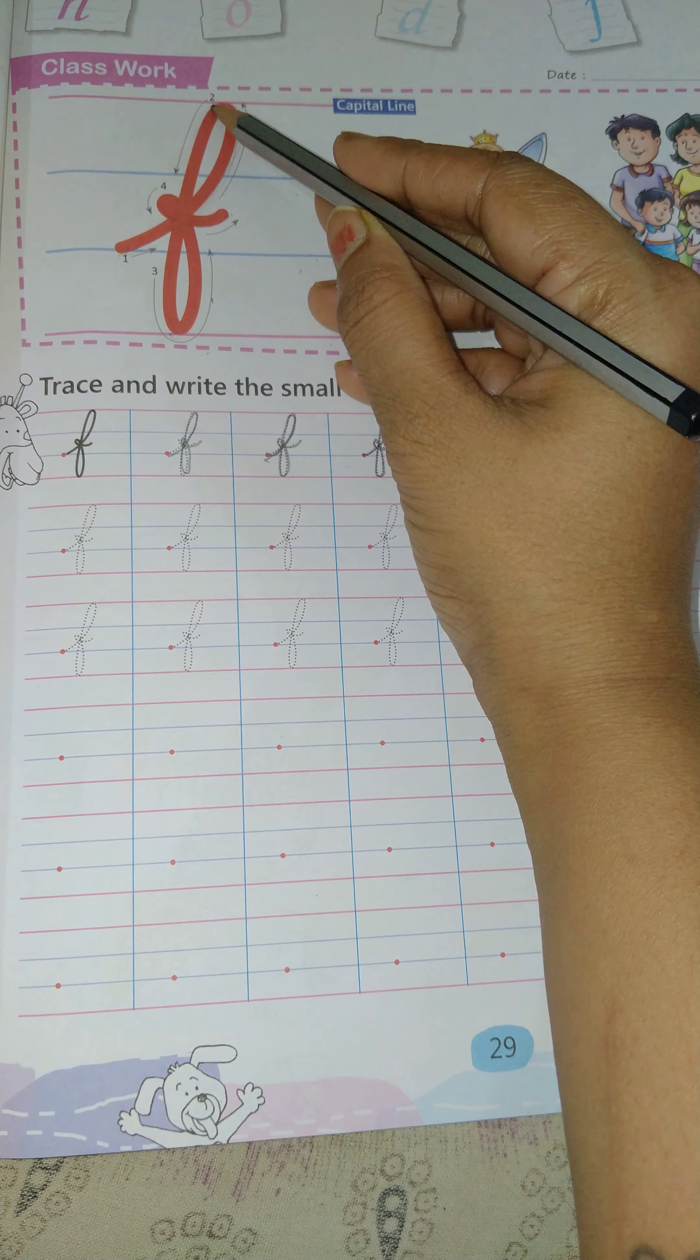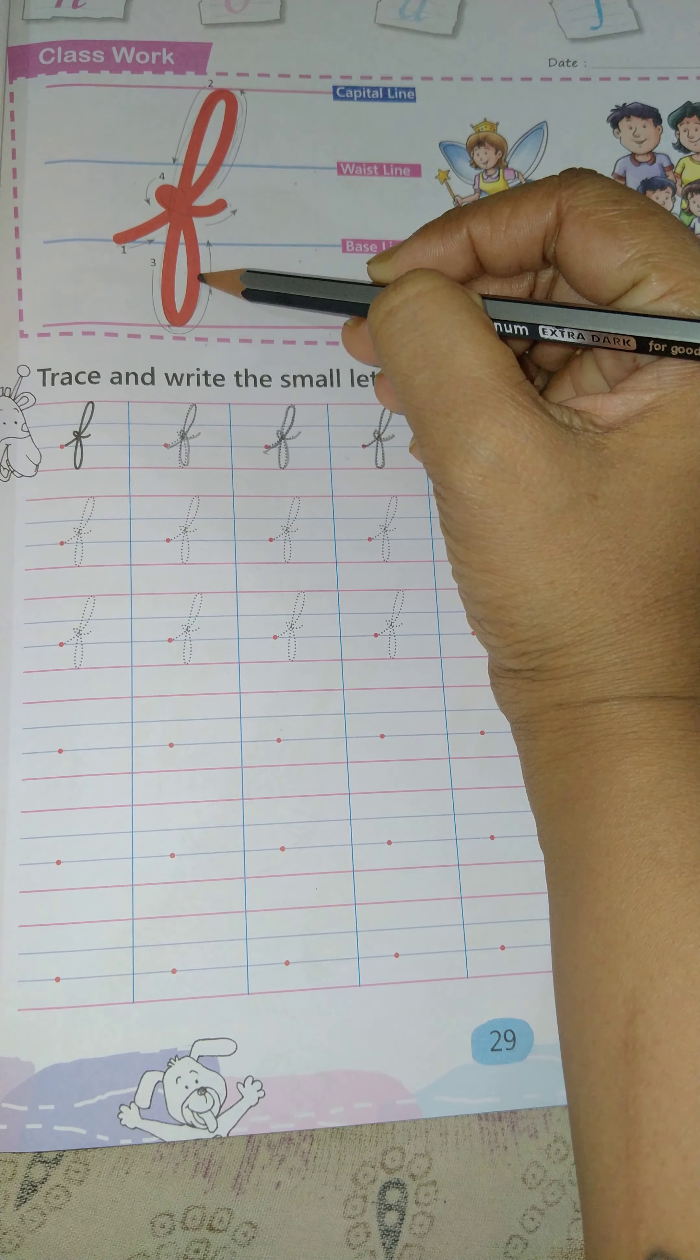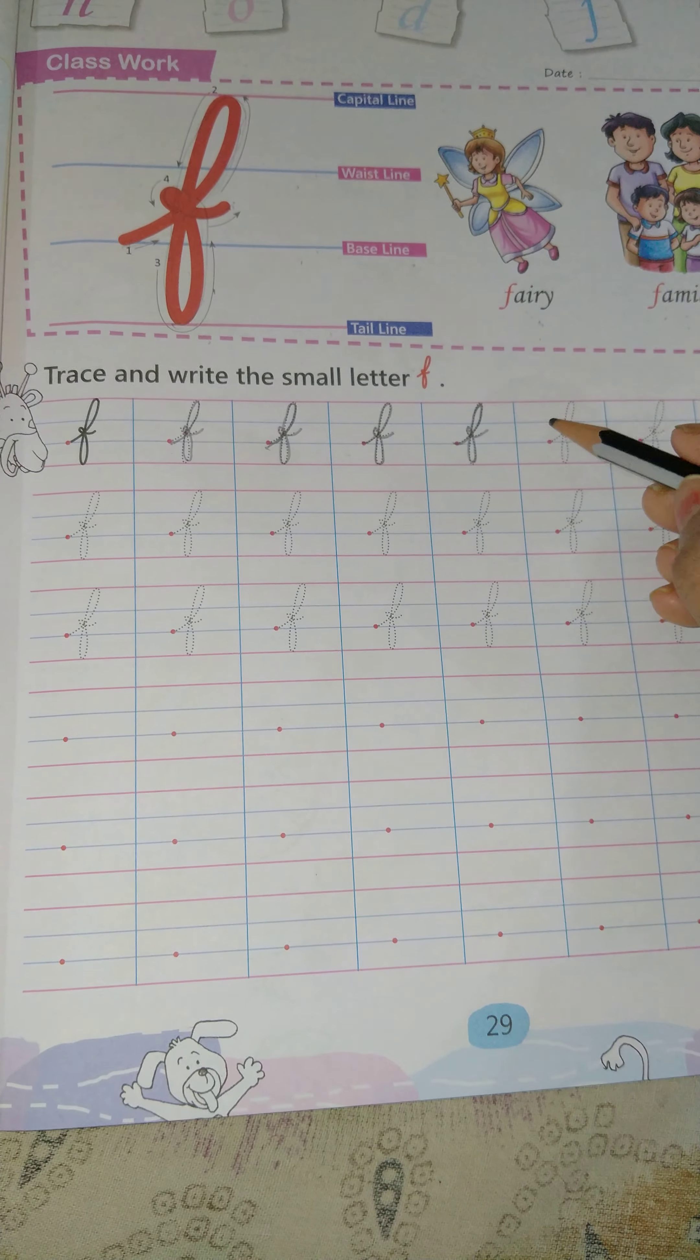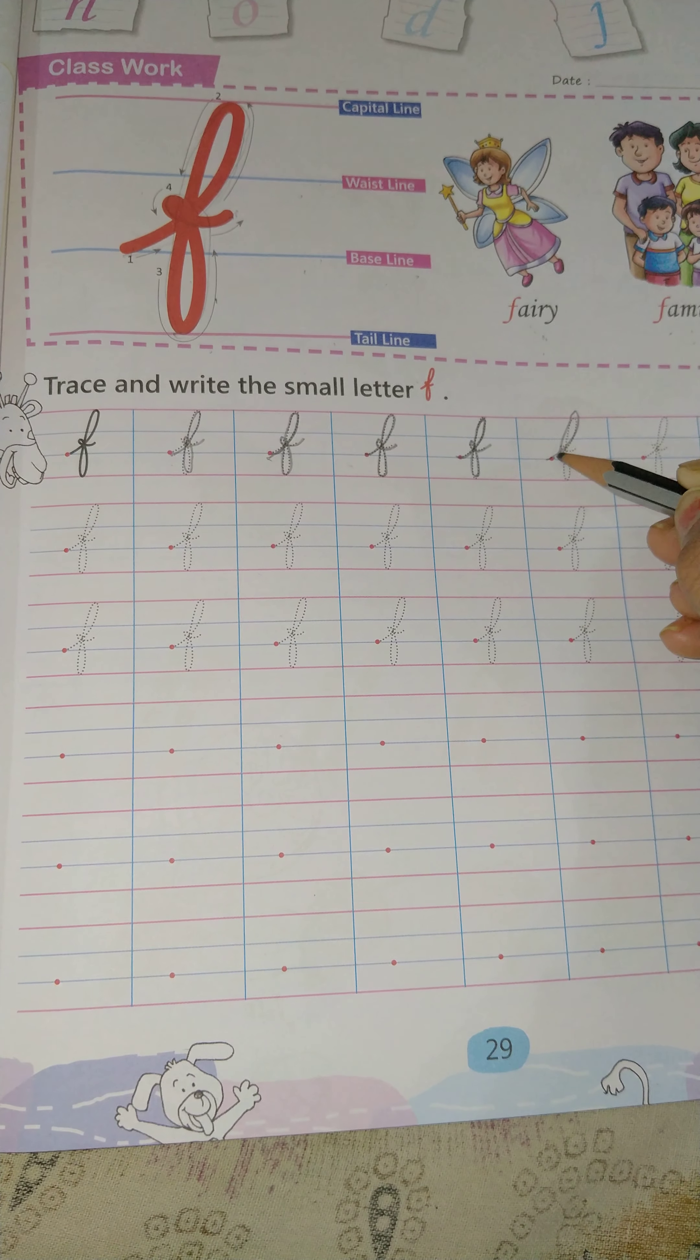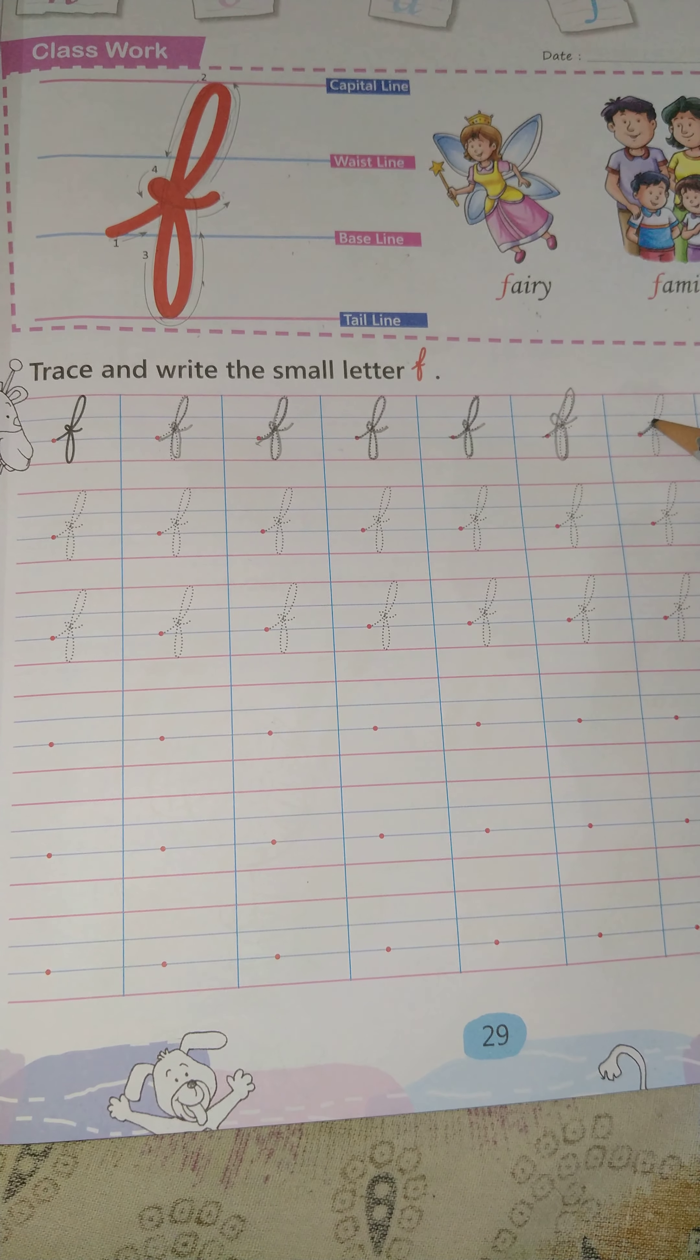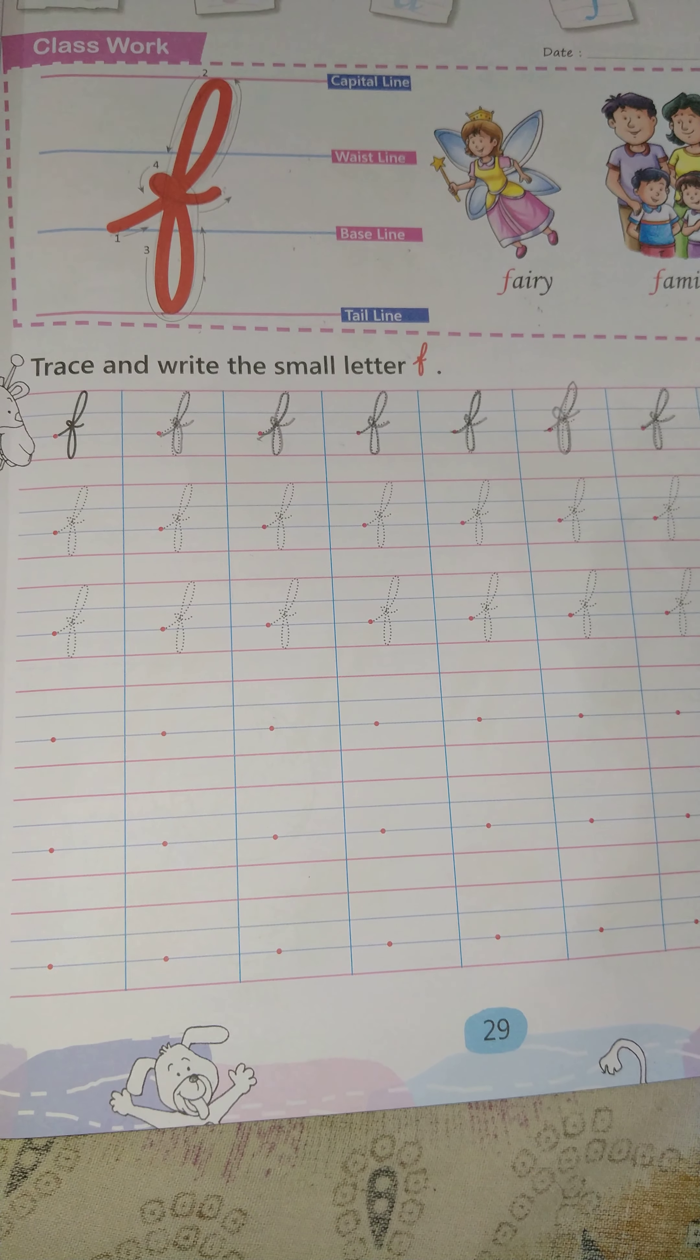Up capital line, down touch tail line. Then back to middle of waistline and baseline. Little curve like this.